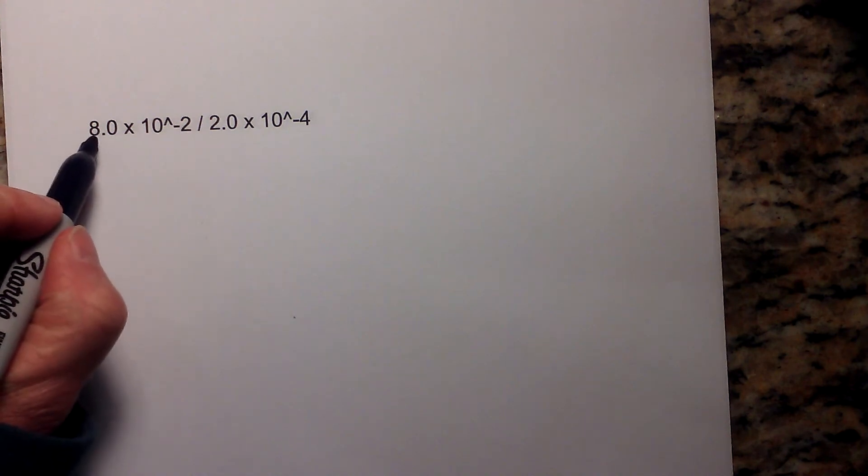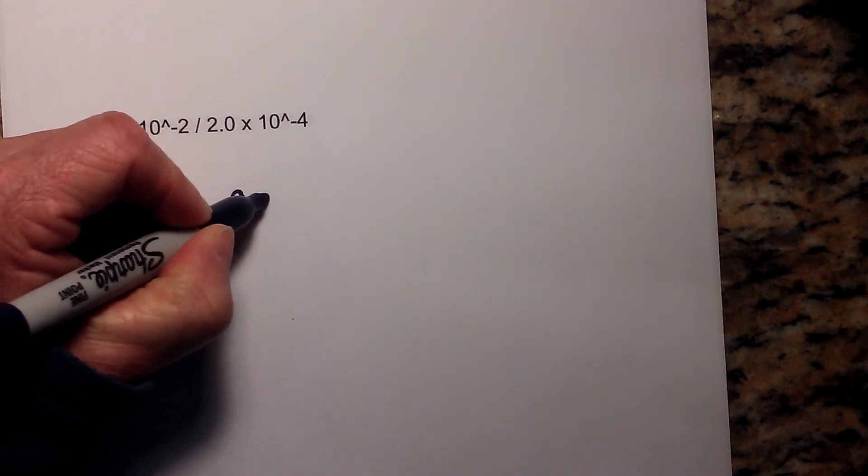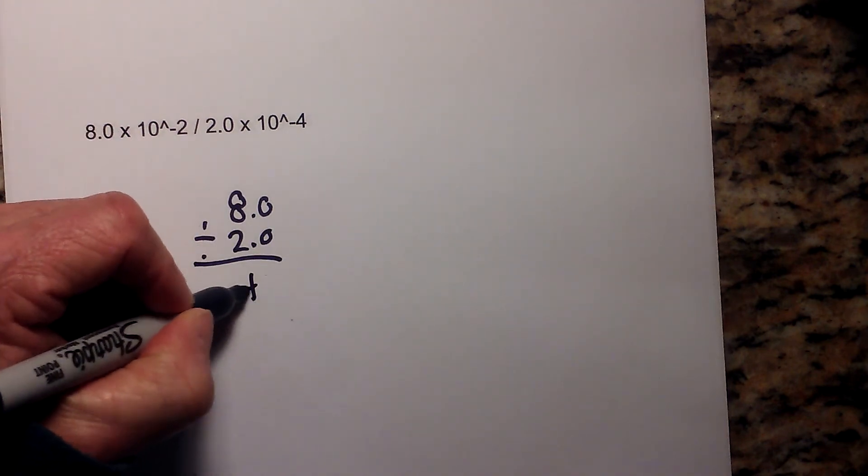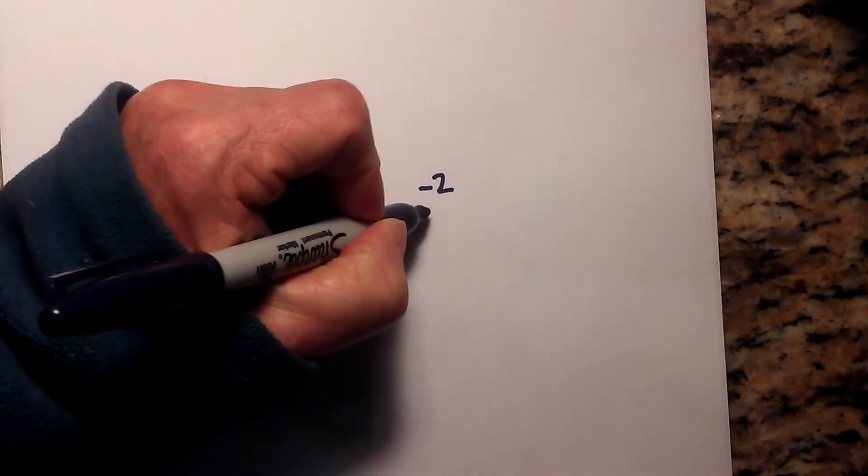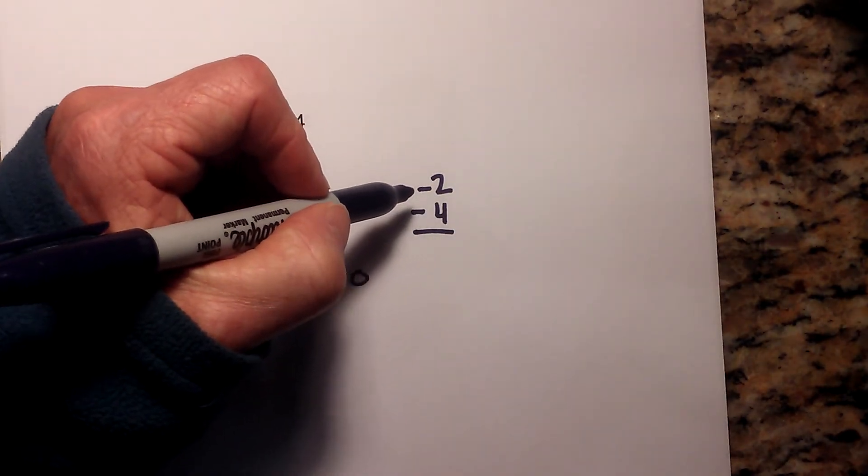Step 1, I'll divide the coefficients. 8.0 divided by 2.0 is 4.0. Next we subtract the exponents, so we have negative 2 minus negative 4. Remember you can use the two mark rule.